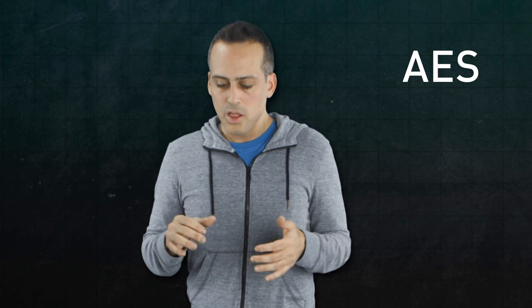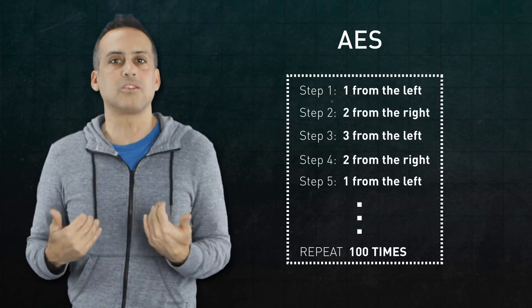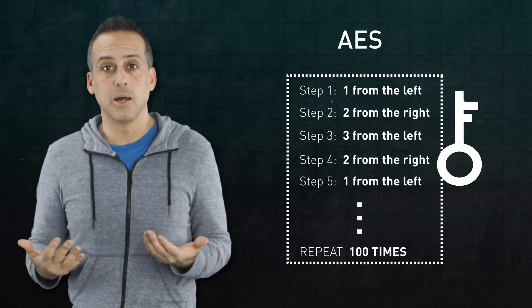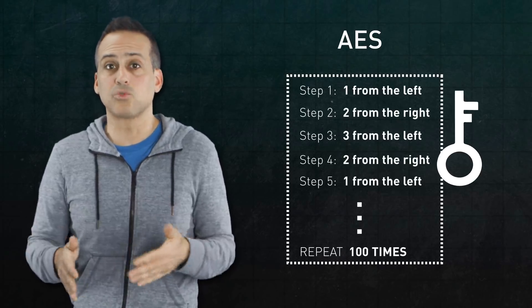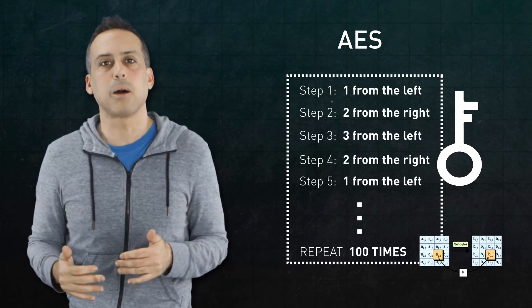AES is more elaborate than this, but it operates on a similar principle. The 1, 2, 3, 2 rule in our example plays the role of the secret key. And the protocol of doing 100 rounds with whatever shuffling rule was chosen, that's analogous to the public algorithm. It sounds simple, right? Well, this combo of partially predetermined and partially improvised shuffling actually turns out to be enormously powerful, because the only fundamental attack against it is to guess the key by trial and error.